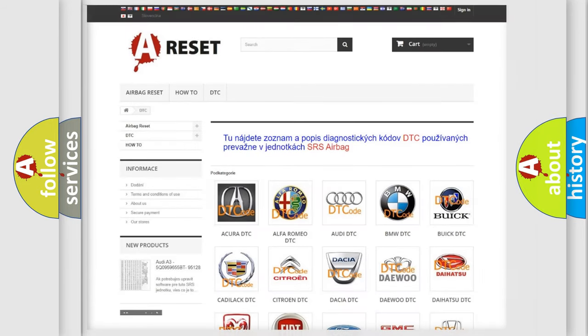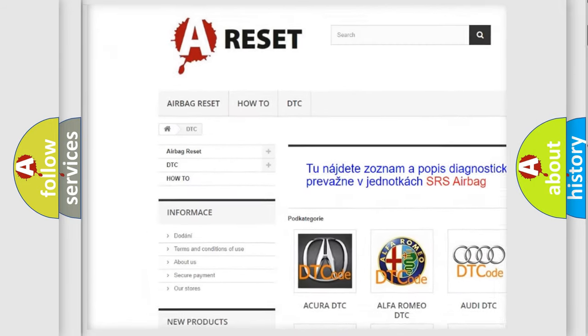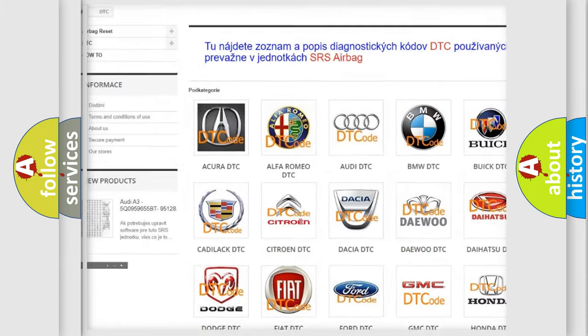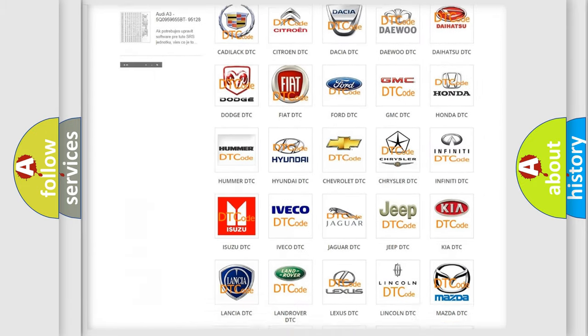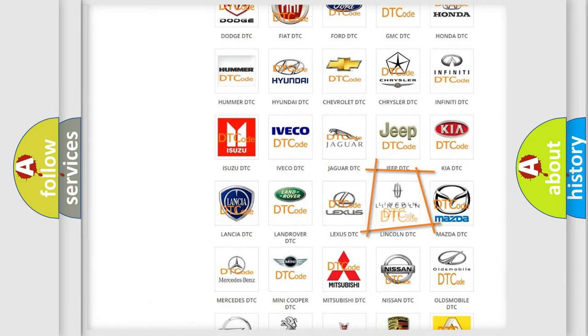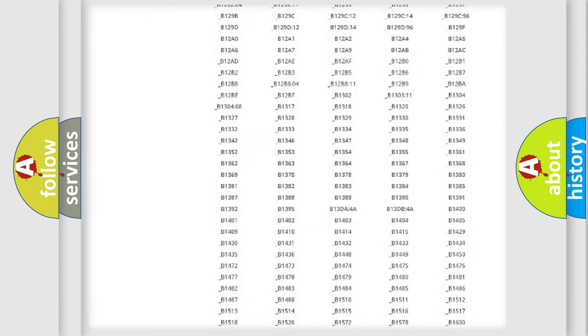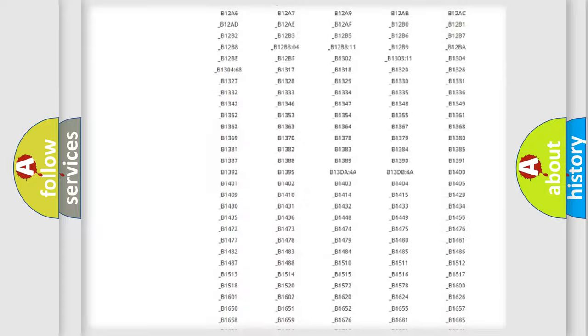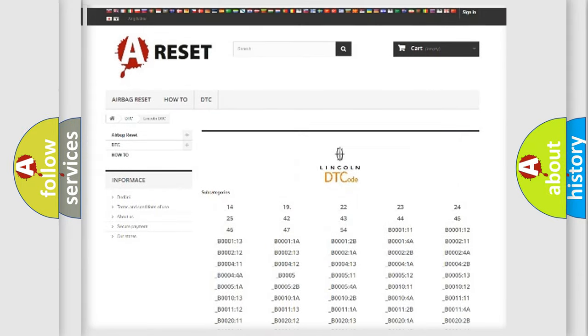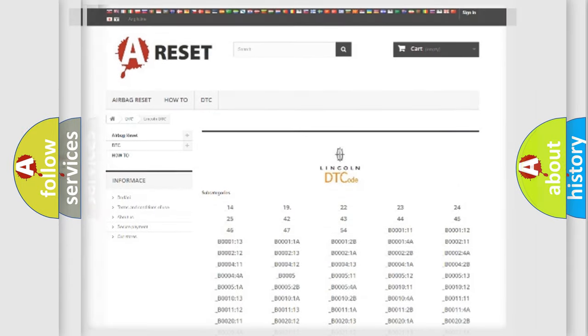Our website airbagreset.sk produces useful videos for you. You do not have to go through the OBD-2 protocol anymore to know how to troubleshoot any car breakdown. You will find all the diagnostic codes that can be diagnosed in a link for vehicles, and also many other useful things.